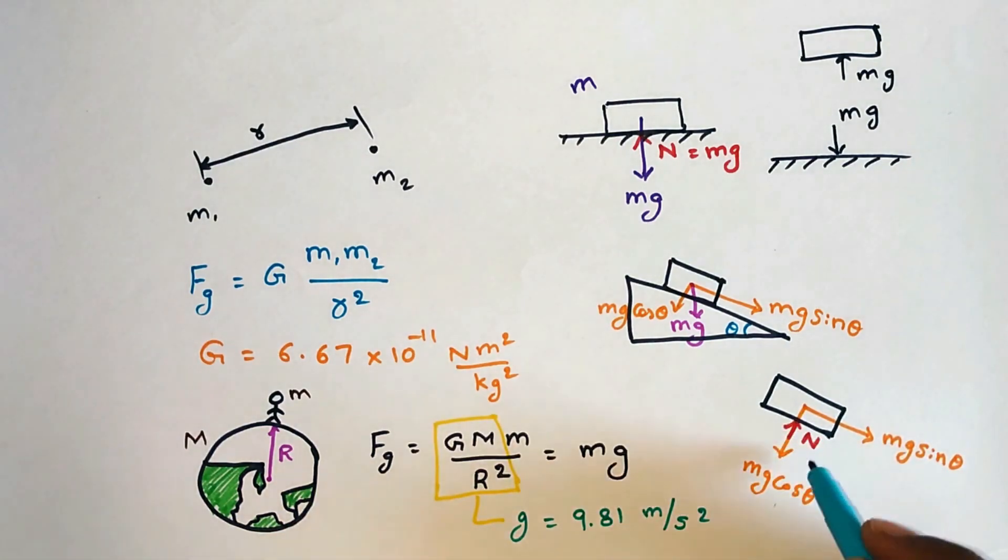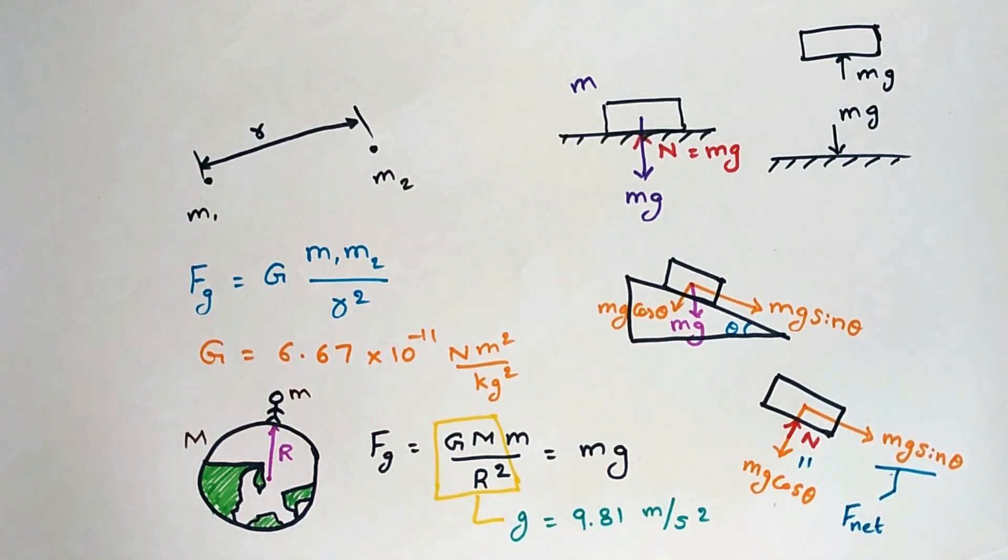Here n is equals to mg cos theta and mg sin theta will be the net force acting on the block which makes it to slide down. Now, let's discuss about friction.